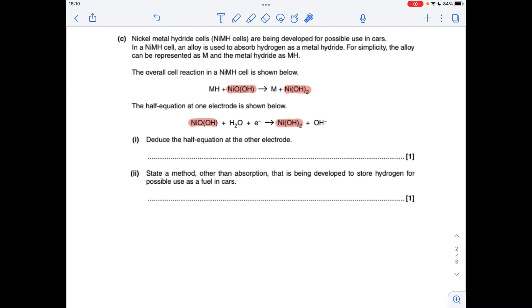And finally, part C. You can see I've highlighted the things that we've already got in the final equation or the overall equation from the half-equation given. So you can see we haven't got MH or M, so we definitely need those in this half-equation, MH.